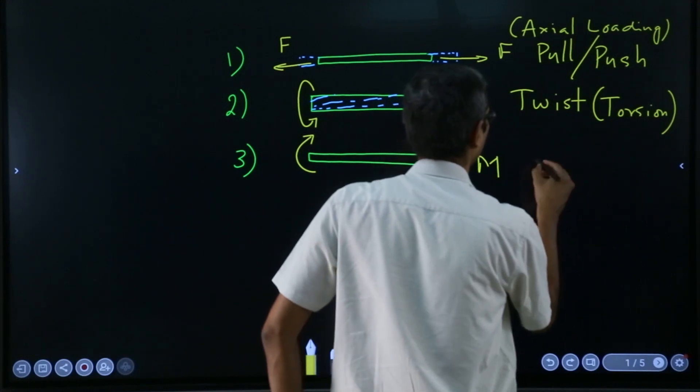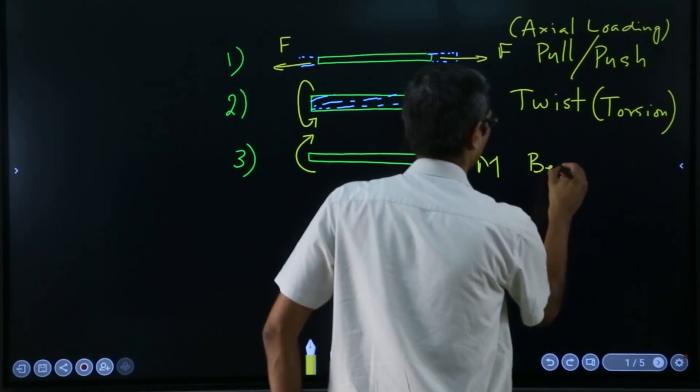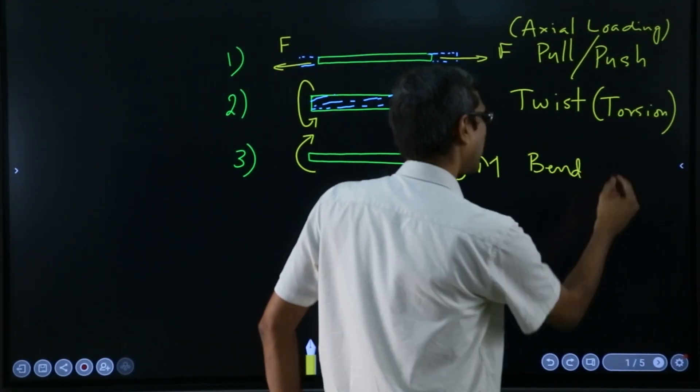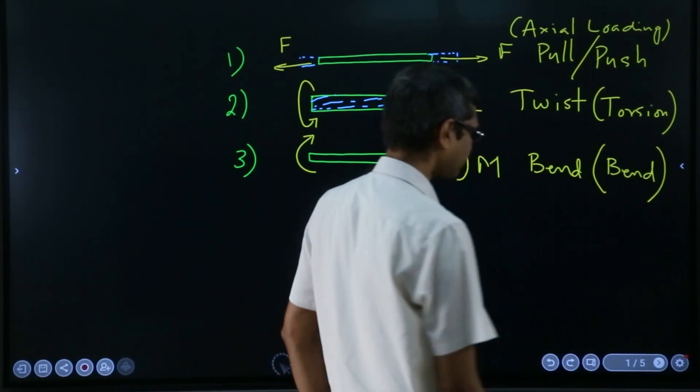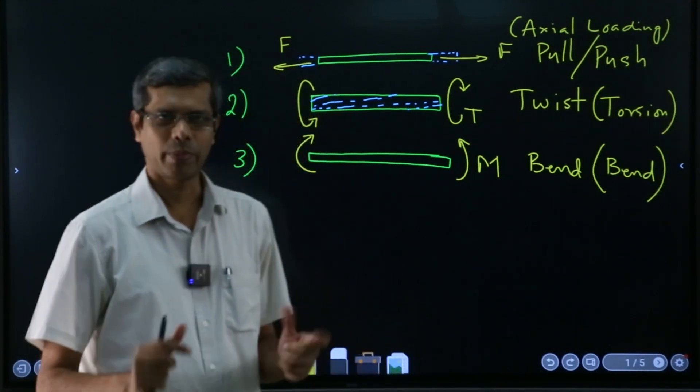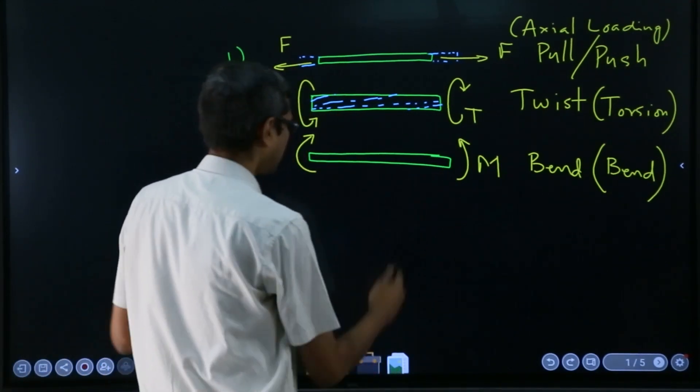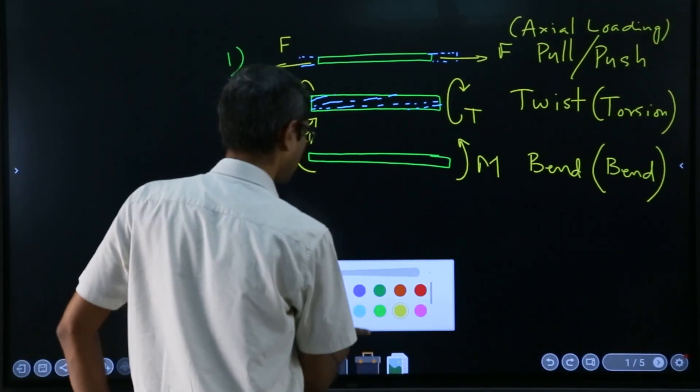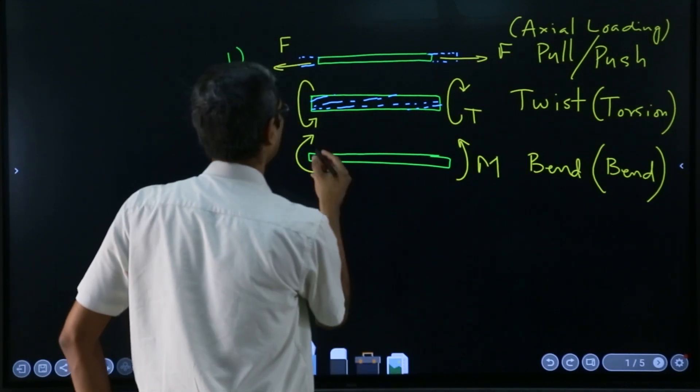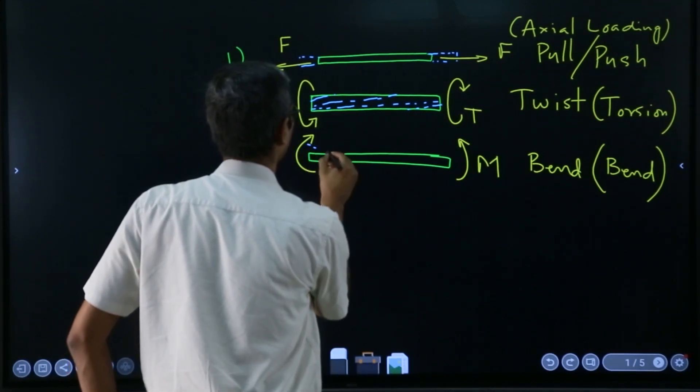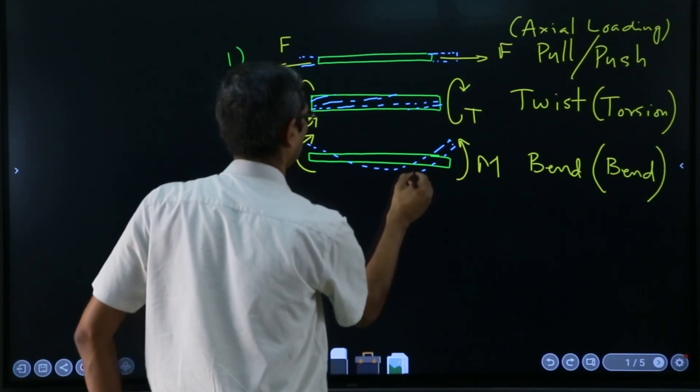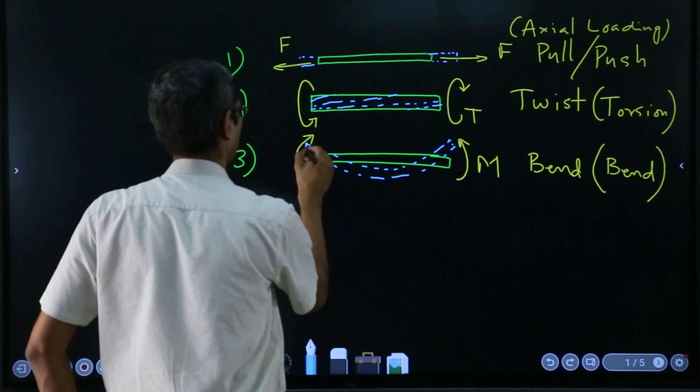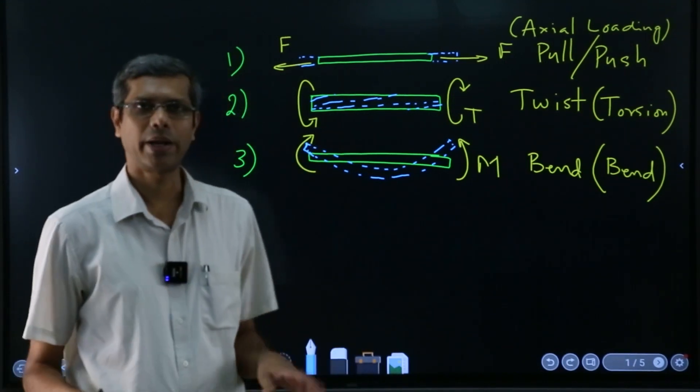The effort is the bending and the technical name also in this case is the same. I am trying to bend it, and then if I try to draw the deformed shape, maybe something like this will be there. Something like that, it will bend.